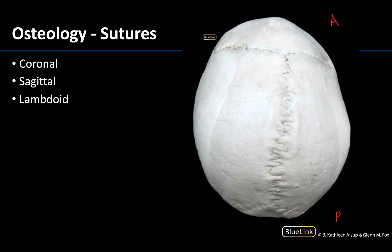So let's ID the bones here. The most anterior bone is going to be the frontal, and you see no suture going down the midline here, so you know you're looking at the unpaired frontal bone. Next, you can see the paired parietal bones, and then you can see a little peak of the occipital bone back here in the posterior region.